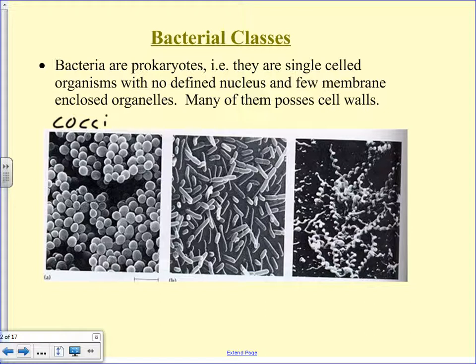The way they figure out if you have strep and can treat it with penicillin is they take a big long Q-tip, swab your throat, smear it on a Petri dish, throw it in an incubator for a couple of days, then look at it under a microscope — little spheres means penicillin. The flesh-eating bacteria is also a form of coccus bacteria, actually a mutated form — Streptococcus mutans — a highly mutated and obviously far more dangerous version.